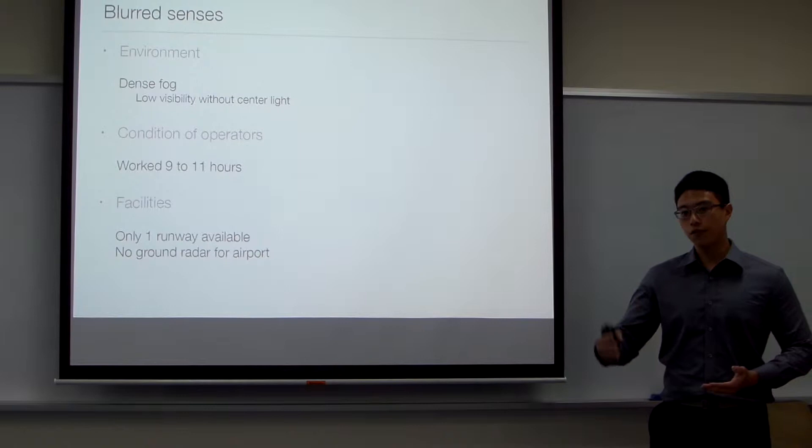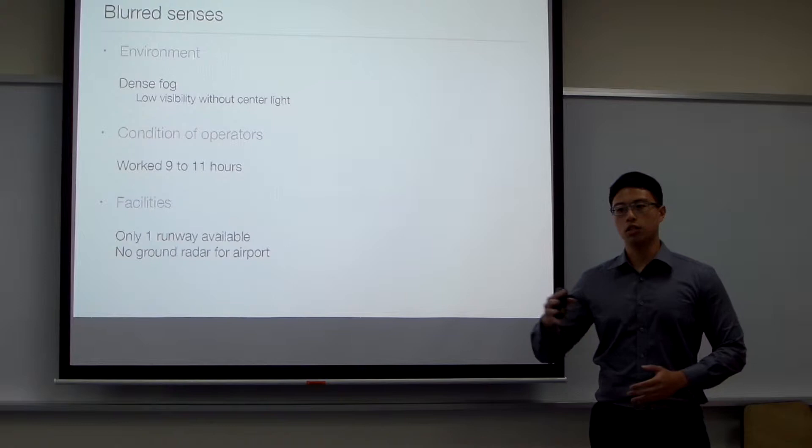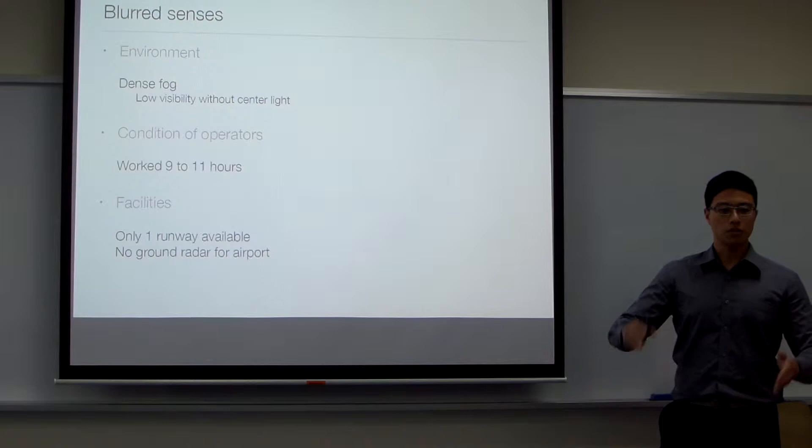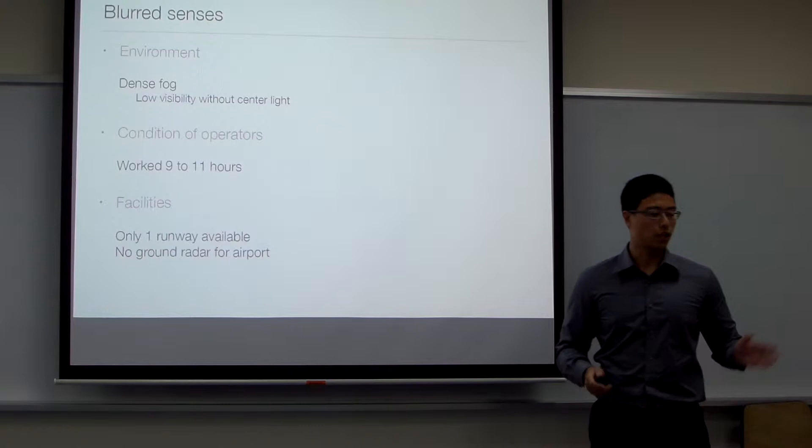Next is the facility. As previously shown in the timeline graph, there's only one runway available and one taxiway. Because of that, all aircraft have to depart using that one runway. And there was no ground radar for the airport, which means the air traffic controller could not give the exact location of each aircraft and give specific instructions.